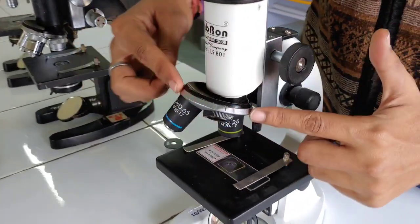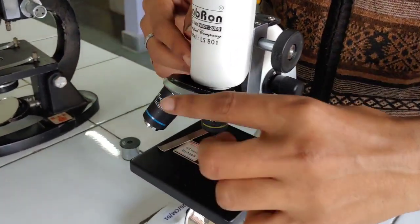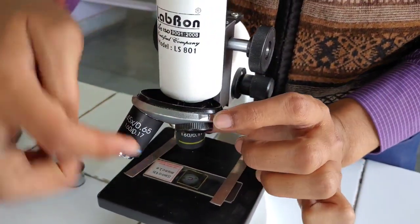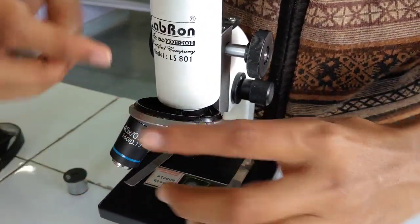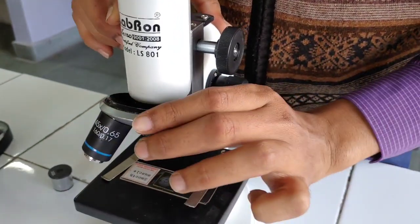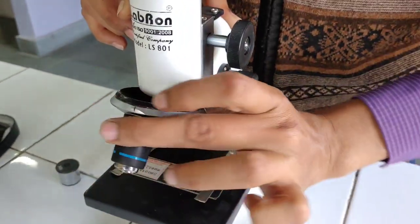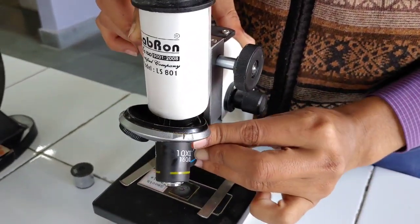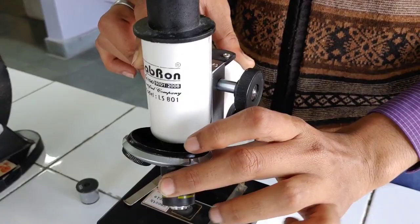Next is nose piece. It is the part of the microscope that holds the objective lens. So it is also called as revolving nose piece. As you have seen in the video, it can revolve and you can adjust the objective as per your wish.